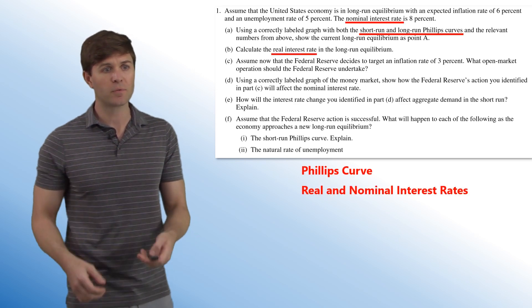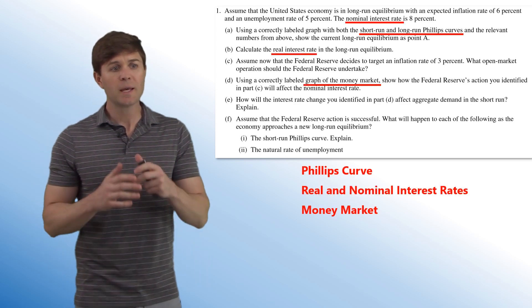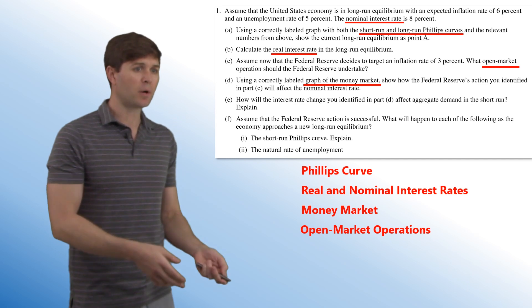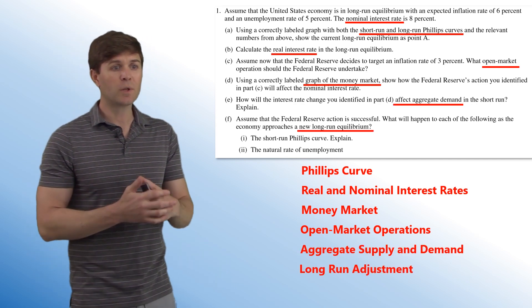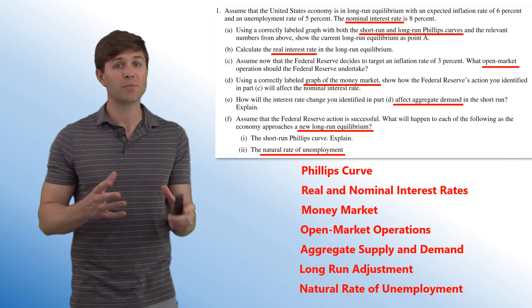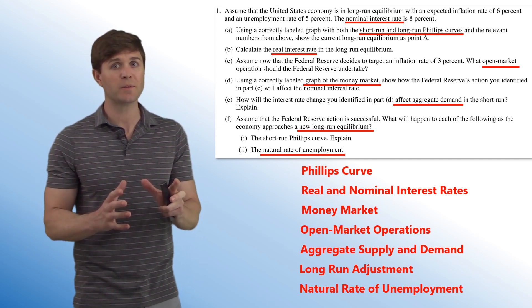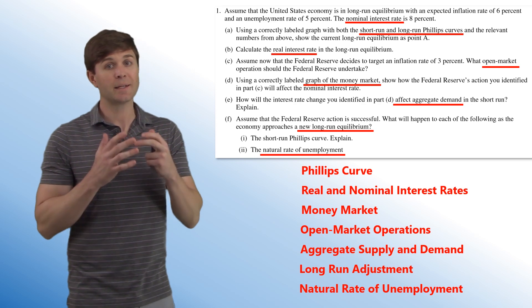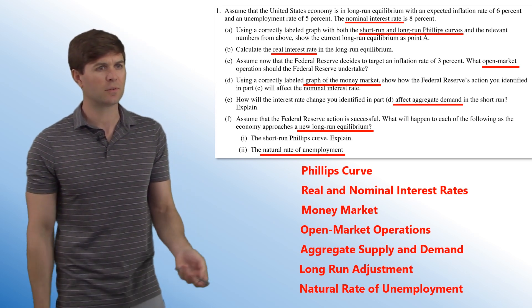This one has so many different concepts in it. It covers the Phillips curve, real and nominal interest rates, the money market, open market operations, aggregate supply and demand, as well as long-run adjustment and the natural rate of unemployment. So there's a lot of different things that it's looking at. It's really a great type of question to practice on and a good example of what could show up on this year's exam.